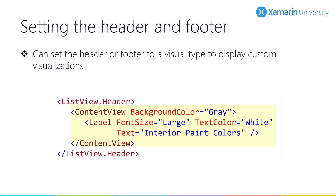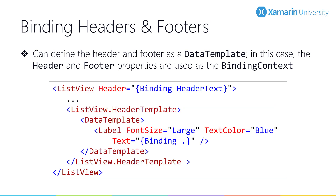The header and footer support data binding, where the binding context is whatever the ListView's binding context is. If you're a fan of the MVVM design pattern, the header and footer are both bindable properties, but they are object values — and we don't want to define visuals in our view model. So we have a second set of properties to define the visual structure for data provided by the view model.